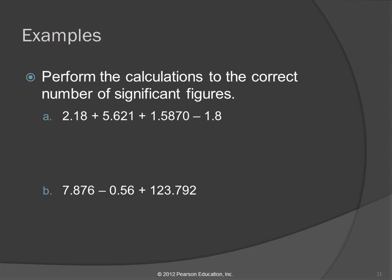Let's do some more examples. Perform the calculations to the correct number of significant figures. So let's do that on the calculator first and write down what the calculator says. I'm getting 7.588. Anybody else get that? Always a good idea to do your calculations twice because it's so easy to make mistakes.